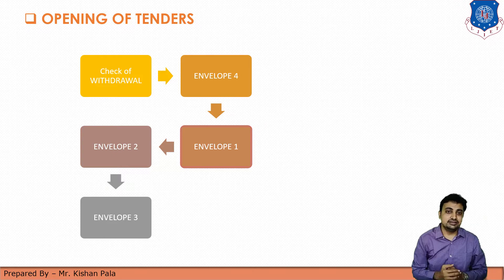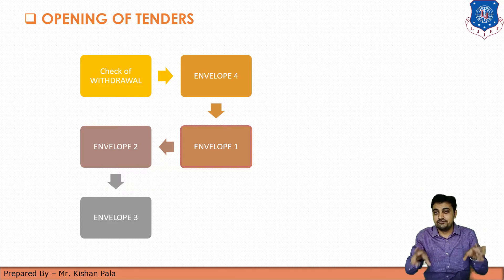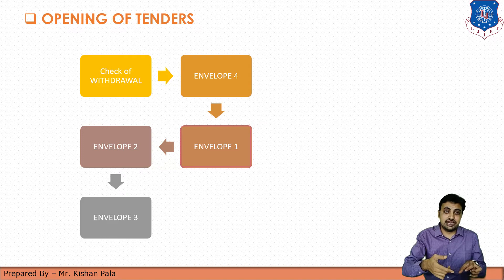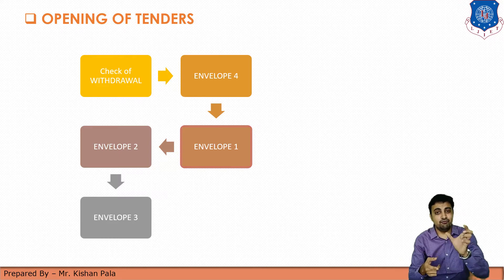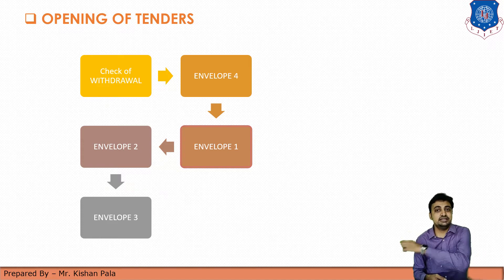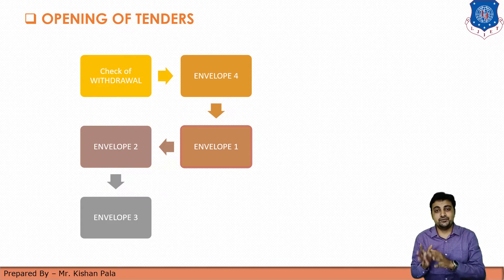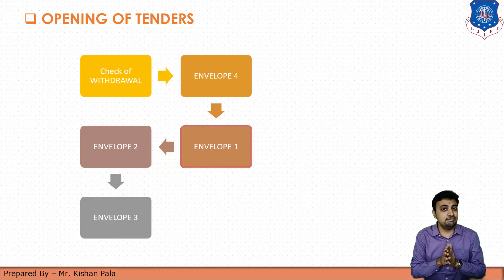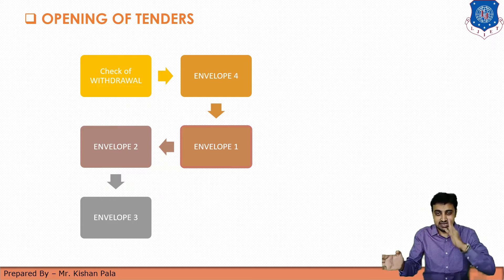The second step is to open envelope number 4. Inside there should be envelopes 1, 2, and 3, and the name of the tender should be mentioned on envelope 4. The next step is to open envelope number 1, which should contain the Earnest Money Deposit by the contractor in the particular mode mentioned in the notice inviting tender. If the EMD is missing, the tender will be rejected.